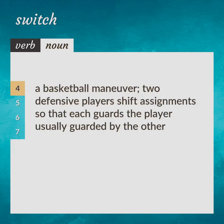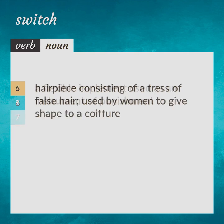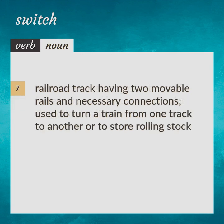A basketball maneuver where two defensive players shift assignments so that each guards the player usually guarded by the other. A flexible implement used as an instrument of punishment. Hairpiece consisting of a tress of false hair, used by women to give shape to a coiffure. Railroad track having two movable rails and necessary connections, used to turn a train from one track to another or to store rolling stock.